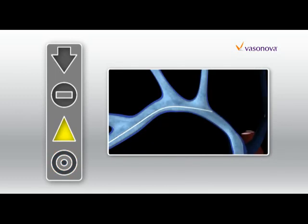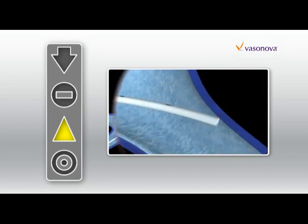The yellow triangle indicates there is not enough information available, which may occur if the catheter tip is against the vessel wall.